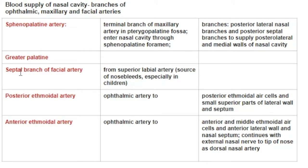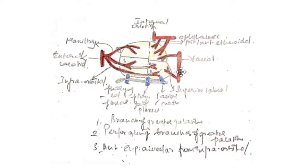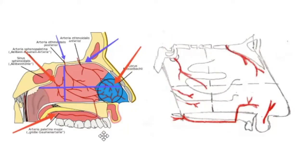The third artery is the septal branch of the facial artery. The facial artery gives two branches to the nasal cavity: the lateral nasal and the superficial labial. The lateral nasal supplies parts of the external nose. The superficial labial supplies the middle part of the lip, then gives an alar branch and a septal branch. The septal branch supplies the antero-inferior part of the nasal septum and forms the third part of the anastomosis.